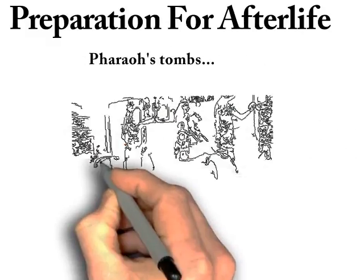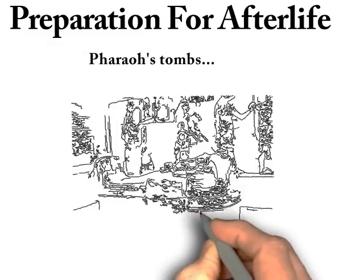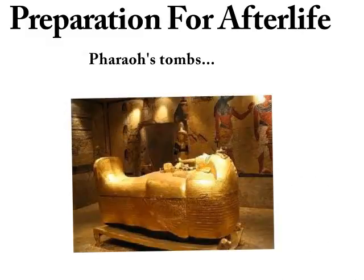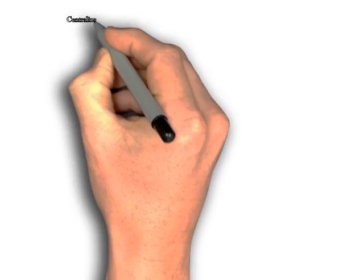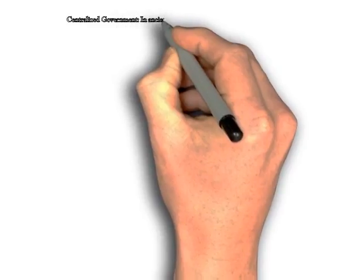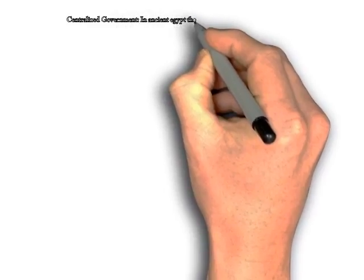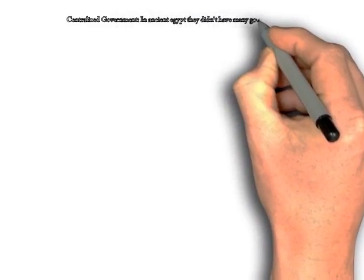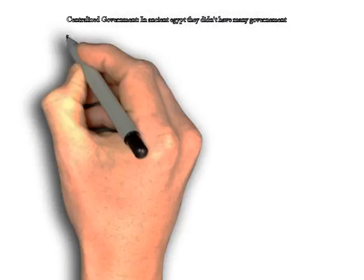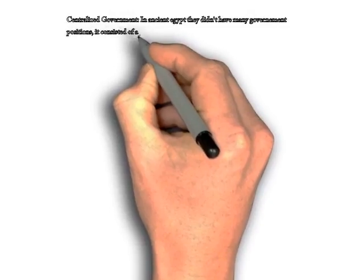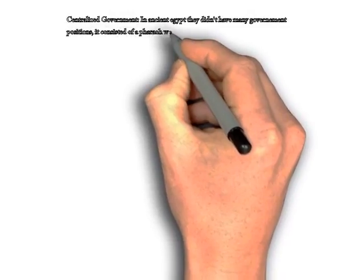Rating the ancient Egyptian civilization — Centralized Government. In ancient Egypt they didn't have many government positions. It consisted of a pharaoh whom everyone thought was a god, and workers were just his assistants.